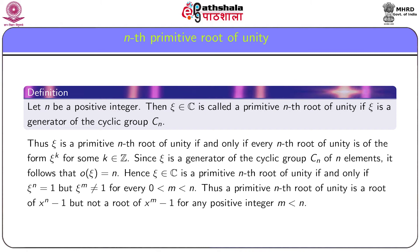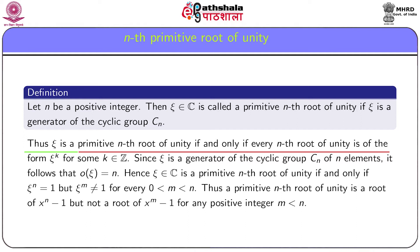We classify the nth roots of unity into two groups. A complex number ξ is said to be a primitive nth root of unity if ξ is a generator of the cyclic group C_n. Thus ξ is a primitive nth root of unity if and only if every nth root of unity u can be expressed as a power of ξ. Since ξ is a generator of the cyclic group C_n of n elements, the order of ξ equals n.